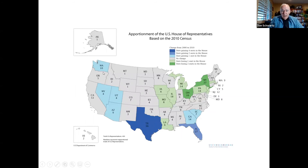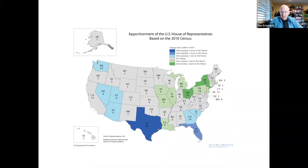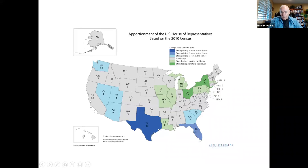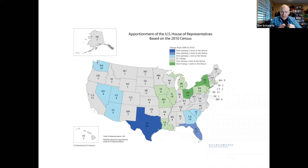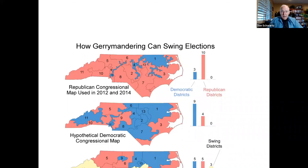Here we see the apportionment of representatives based on the 2010 census, which will change after this year as some states gain population and others lose it. These numbers don't reflect electoral votes — just the number of representatives in the House — but every state has two senators, so you can add two to each state to figure out the electoral vote. State legislatures are empowered to draw district lines, leading to what is called gerrymandering, where they create congressional districts that favor the party that has a majority in the state legislature.